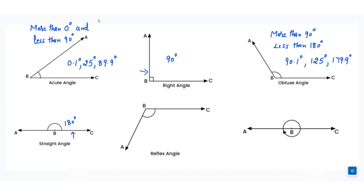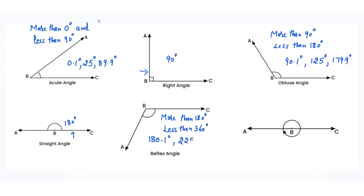Then we have reflex angle. The angle which is more than 180 degrees and less than 360 degrees is called a reflex angle. For example, 180.1 degree is a reflex angle. 225 degree is a reflex angle. 359.9 degree is a reflex angle because it is less than 360 degrees and more than 180 degrees.